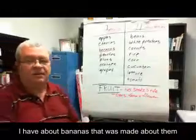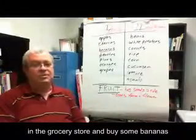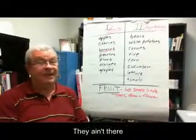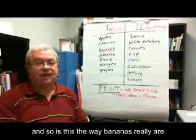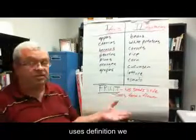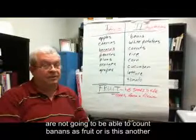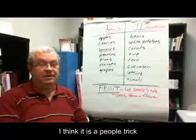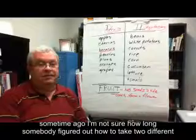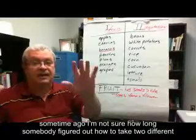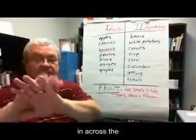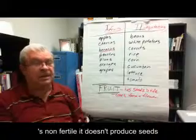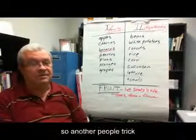What about bananas, though? Let's think about them. You go to the grocery store and buy some bananas — you don't have to spit out seeds or avoid them; they ain't there. So if we use this definition, we're not going to be able to count bananas as fruit. Or is this another people trick? Well, I think it is. Somebody figured out how to take two different varieties of bananas and cross them to make a hybrid that still makes the banana, but it's non-fertile — it doesn't produce seeds. So another people trick.